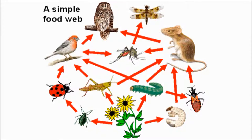For example, what would happen if the caterpillars disappeared? Well the mouse and the robin would have less food, so they'd have to eat more insects and their numbers would probably drop. The plants are going to do better because there'll be one less creature eating them, so this will help the other insects — and already it's starting to get very complicated. But ecosystems are complicated, so food webs are far more accurate and useful than food chains.